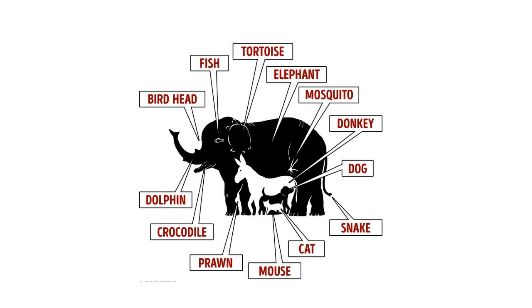Beginning with the fish, which is the elephant's eye, and going clockwise. Next, there's the tortoise, which is kind of like a turtle, an elephant, a mosquito, a donkey, and a dog.